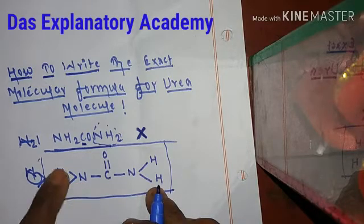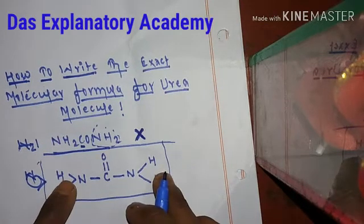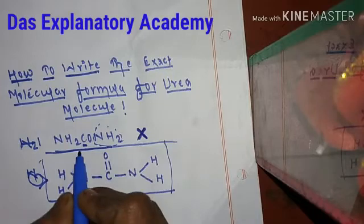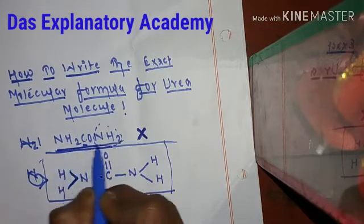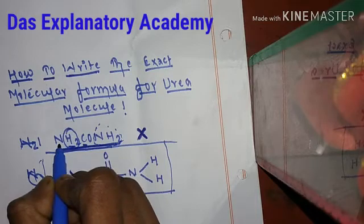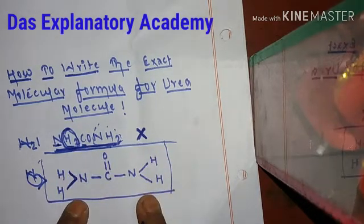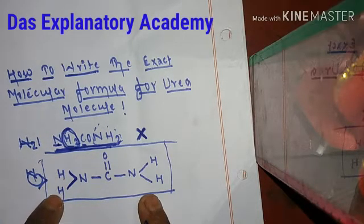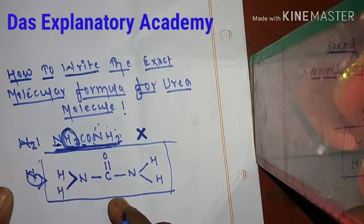The nitrogen atom is forming bonds with two separate hydrogen atoms, and that bond is formed at the extreme left of the molecular structure. But in the common formula NH2CONH2, the H2 is written at the right side of the nitrogen atom, which must not be placed there. Looking at the molecular structure of urea, the two hydrogen atoms bonded to one nitrogen atom are at the extreme left.